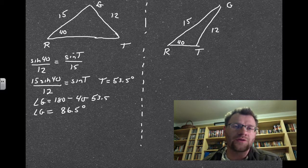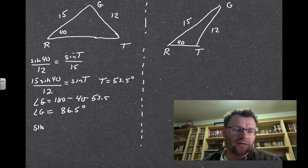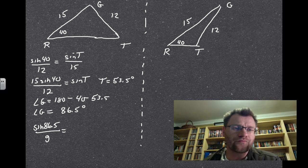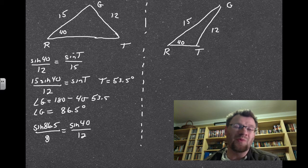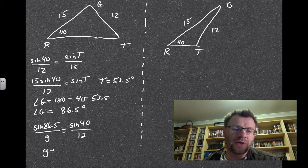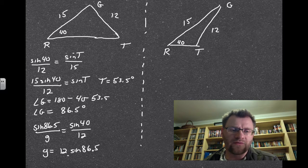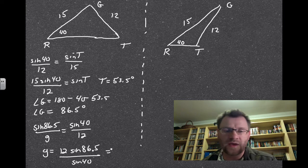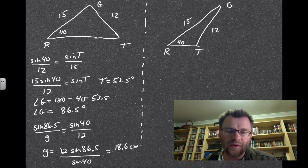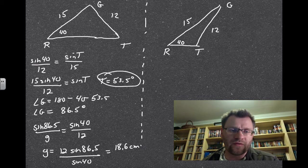With angle G known, we use the law of sines one more time to find side G. Sine of 86.5 over G equals sine of 40 over 12. Rearranging: G equals 12 sine 86.5 divided by sine 40, giving side G equal to 18.6 centimeters. We've now solved the first triangle — all missing sides and angles found.